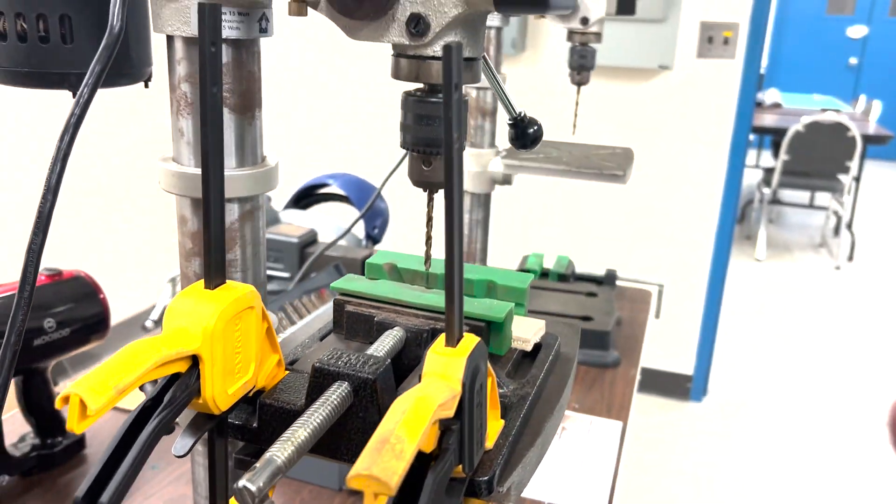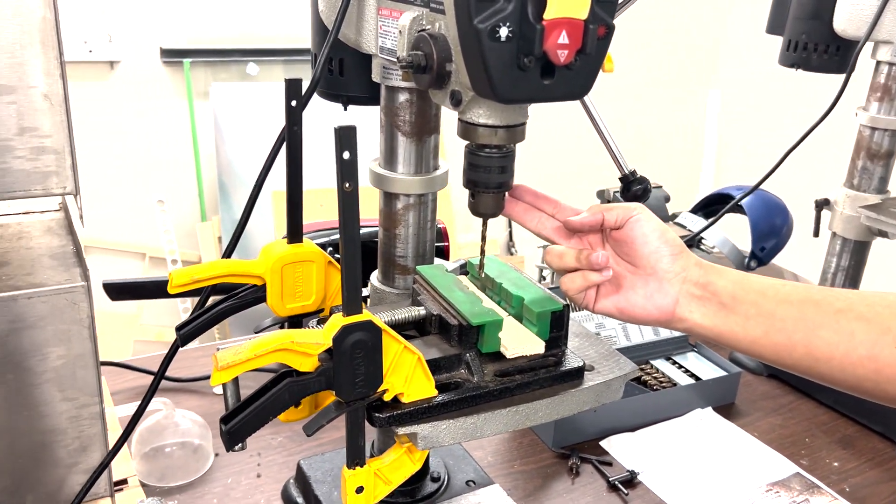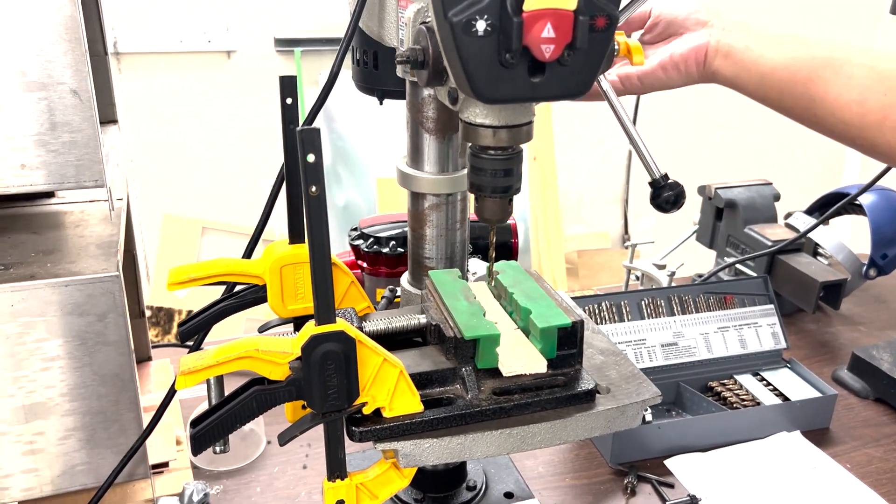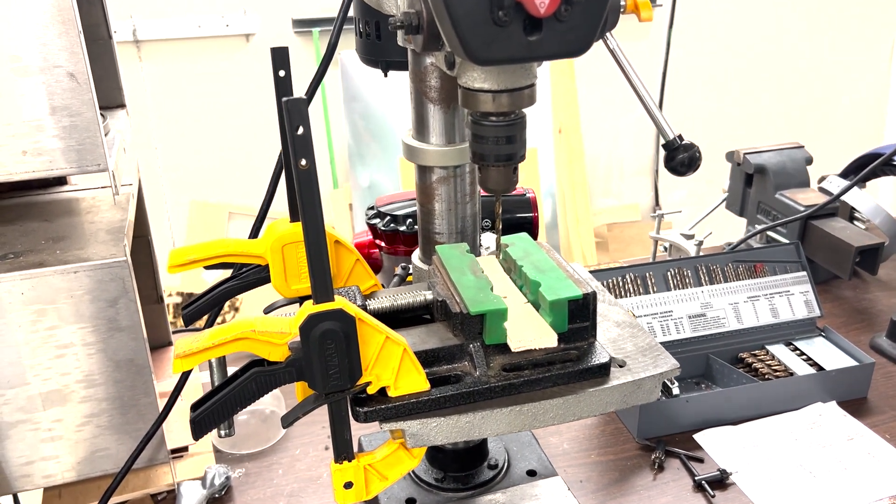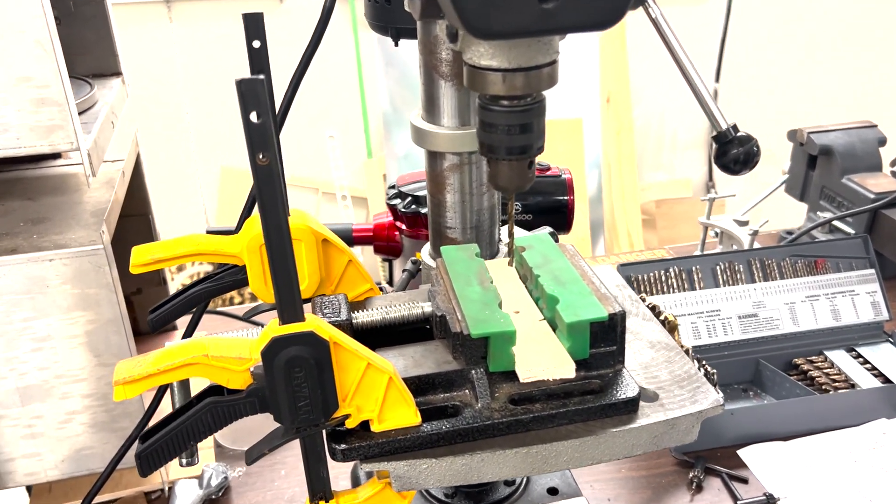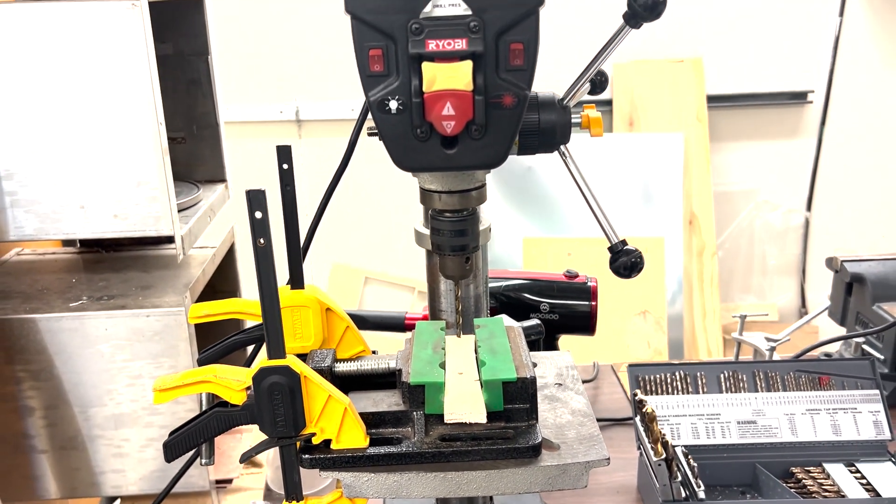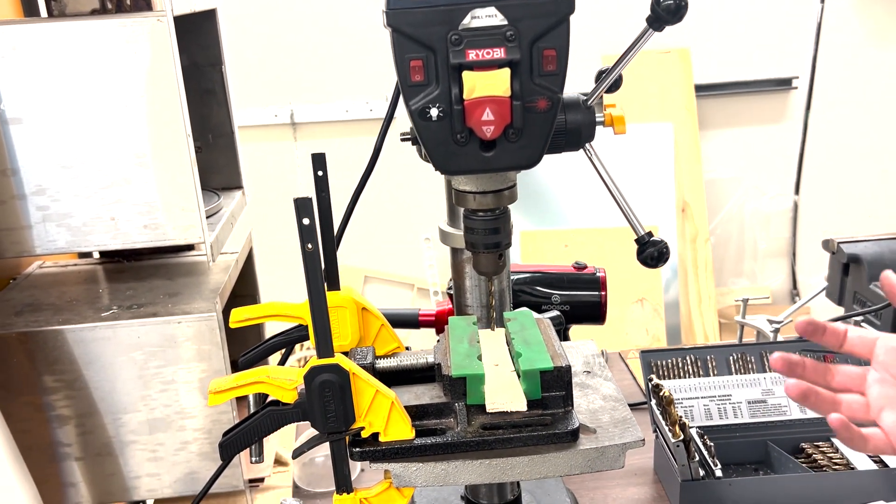Once your material is locked into place, your bit secured into the chuck, everything's out of the way for the feed handle to turn fully, and everyone in the room is wearing the appropriate safety gear—safety glasses, long pants, etc.—you can finally turn on and operate the drill press.